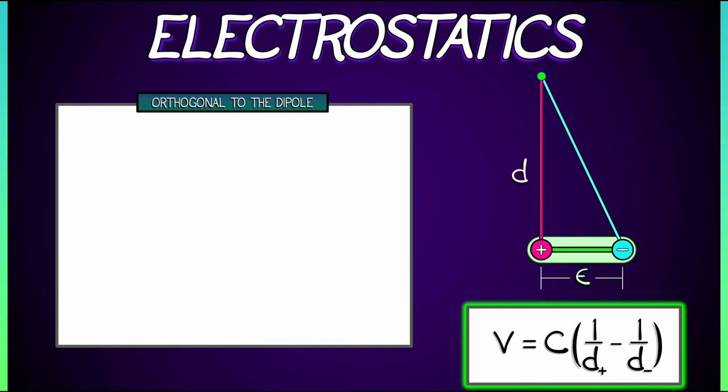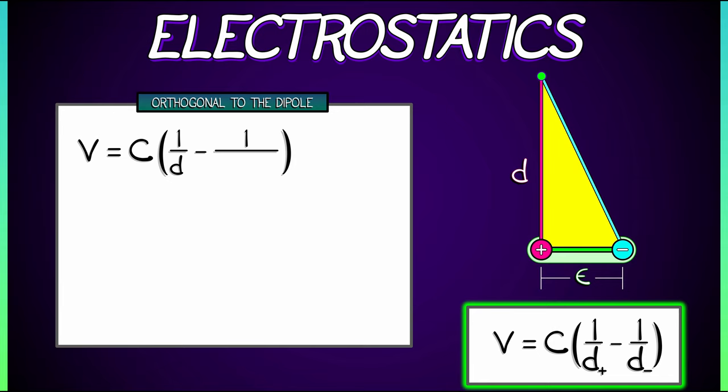This quantity V is equal to C times quantity one over D, that's the distance to the positive charge, and then minus one over the distance to the negative charge. What is that? Well, you could see I've got a little right triangle in there. So a little bit of Pythagoras gives us that that distance to the negative charge is square root of D squared plus epsilon squared.